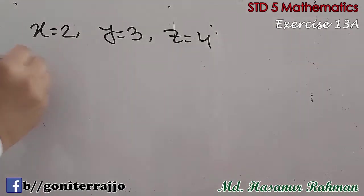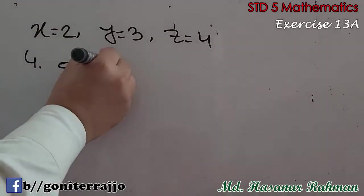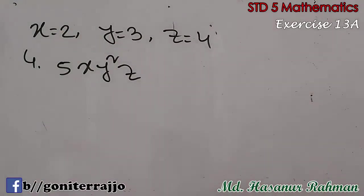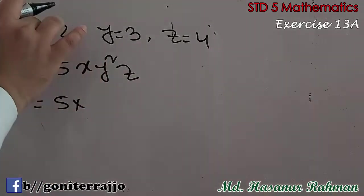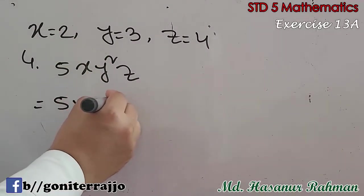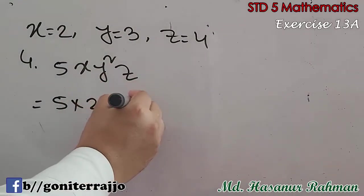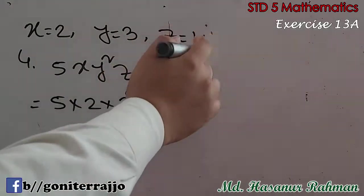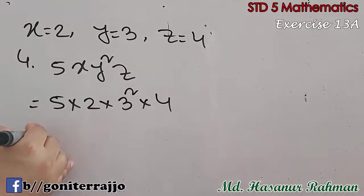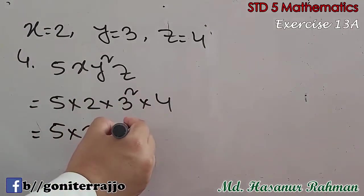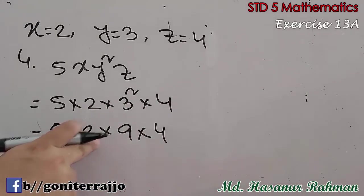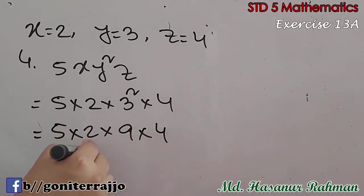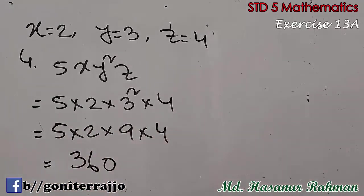Now number 4: 5xy²z. So here 5 into x — the value of x is 2 — into the value of y, which is 3, squared, into the value of z, which is 4. Now 5 into 2 is 10, into 3 squared means 9, into 4. So 10 times 9 is 90, times 4, that is 360. So 360 will be the answer of number 4.